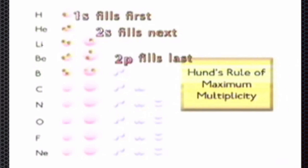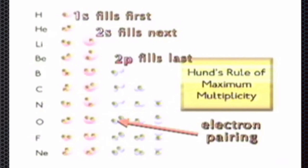This diagram shows how the orbitals of the elements from one to ten fill with electrons, filling the orbitals of lowest energy first. The P orbitals take one electron each and after this, pairing begins. This is repeated with all of the elements. It is called Hund's rule of maximum multiplicity.